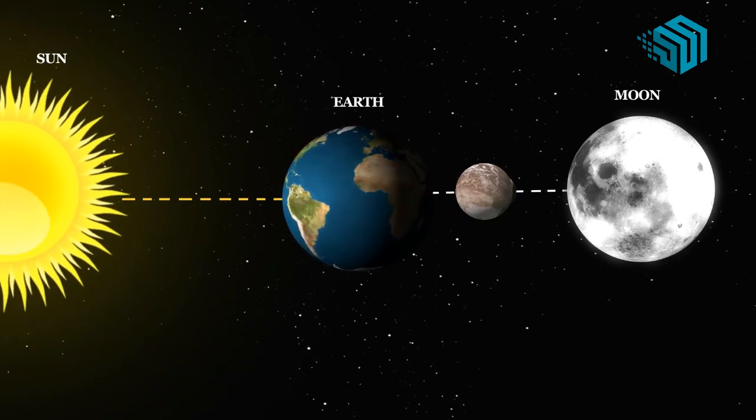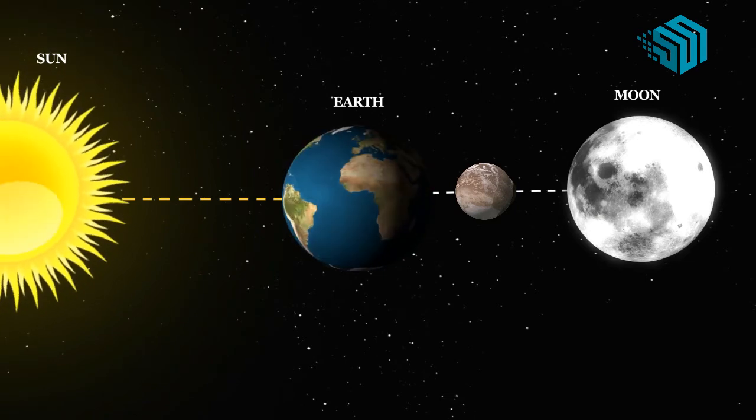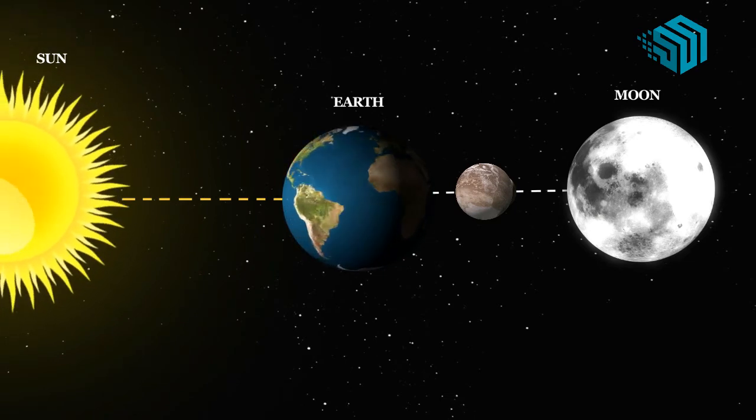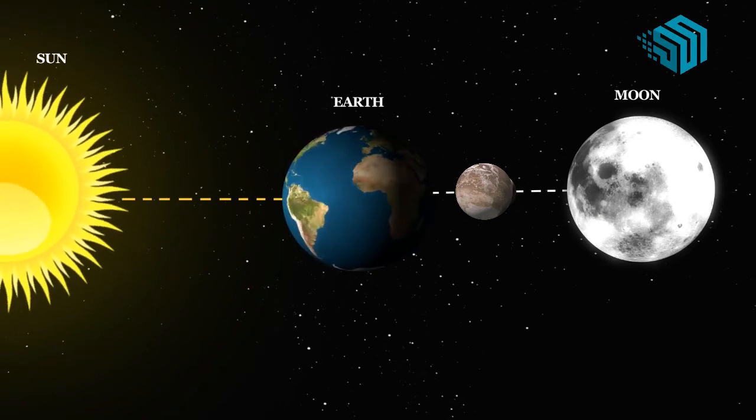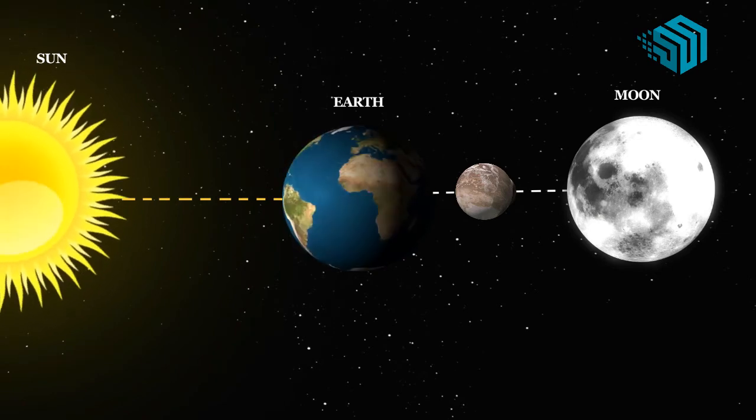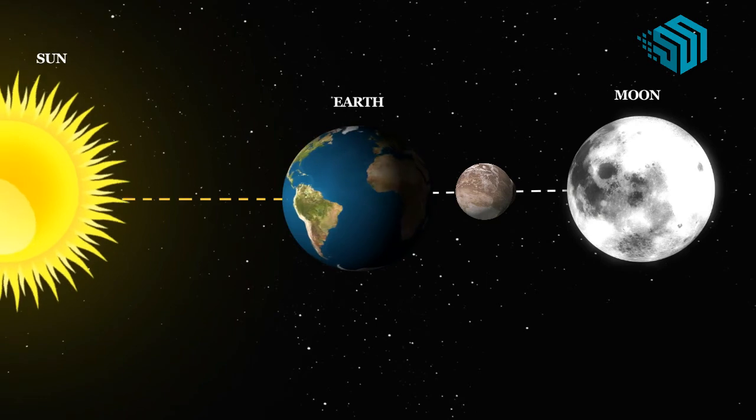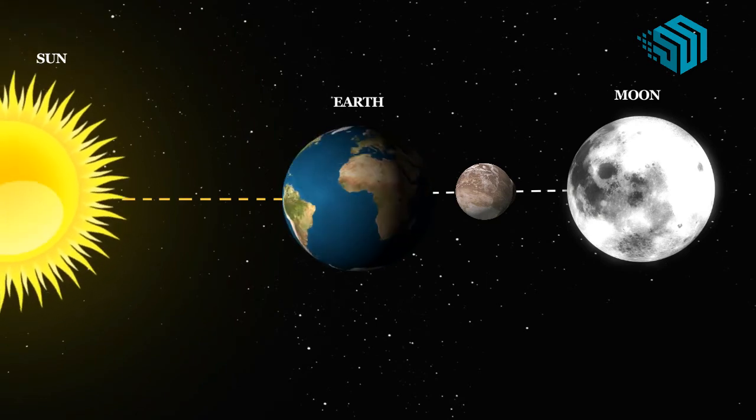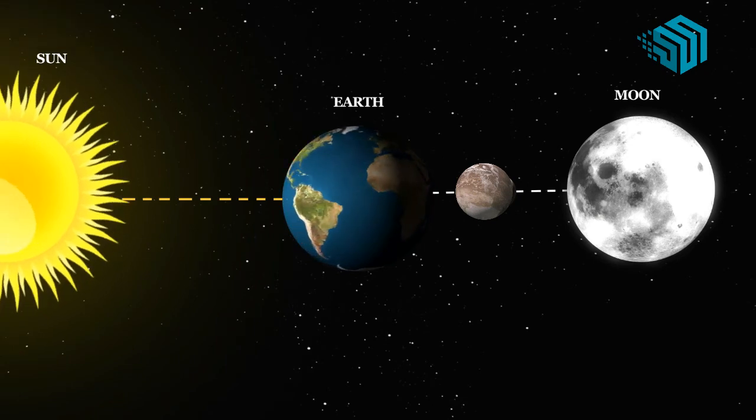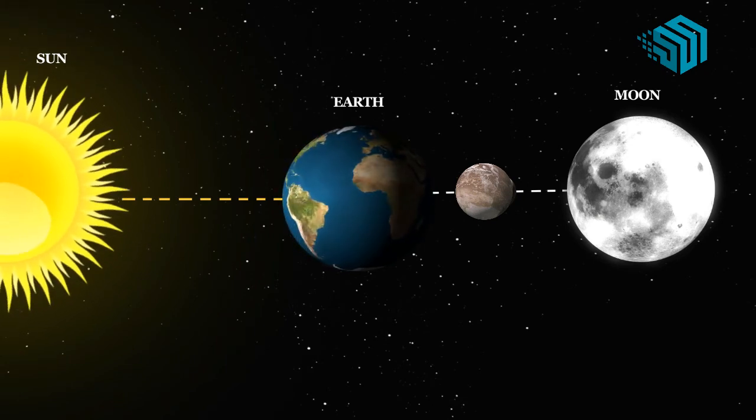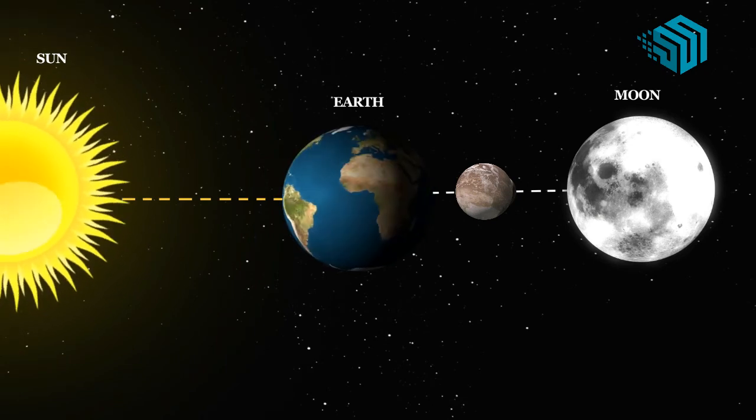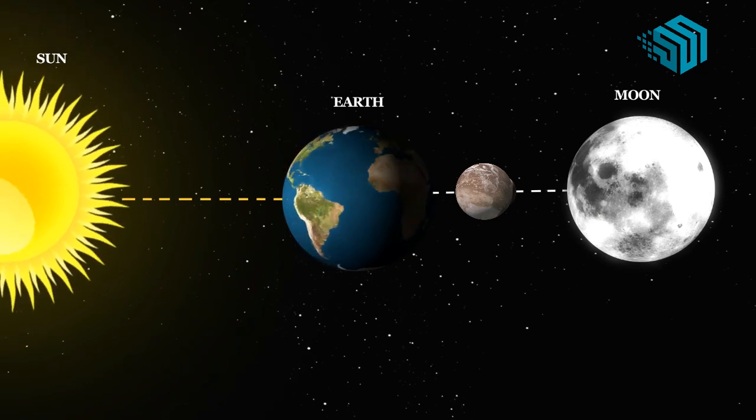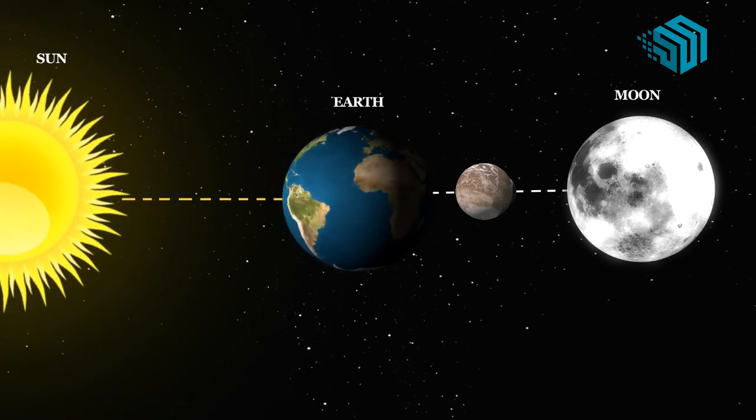When the moon, the earth and the sun are in a straight line and the earth is between the other two, we are able to see the full moon. On the other hand when the moon is in between the earth and the sun, we are able to see the new moon, that is the whole surface of the moon appears in dark.